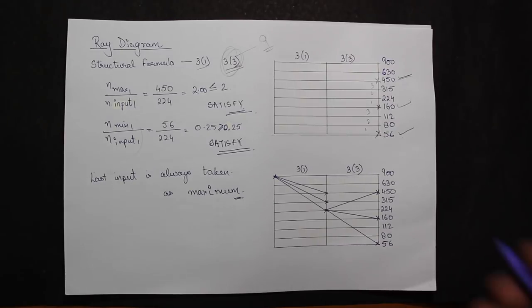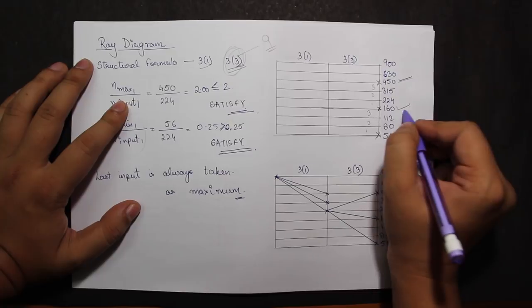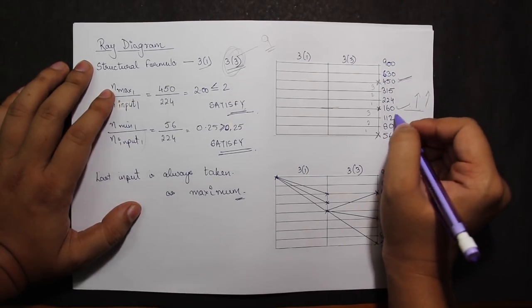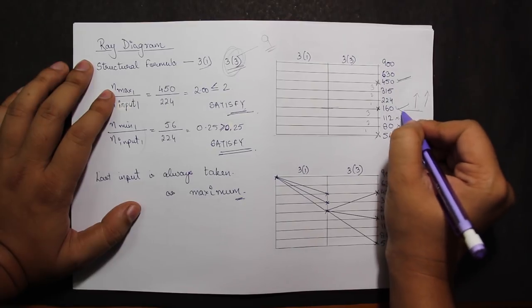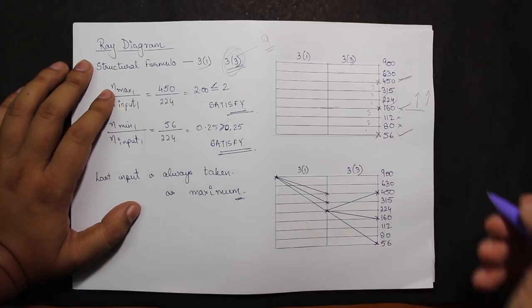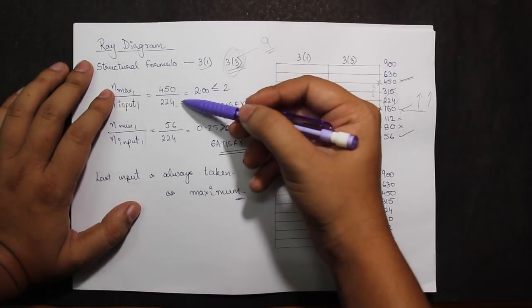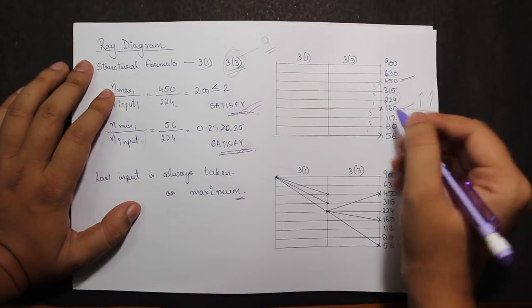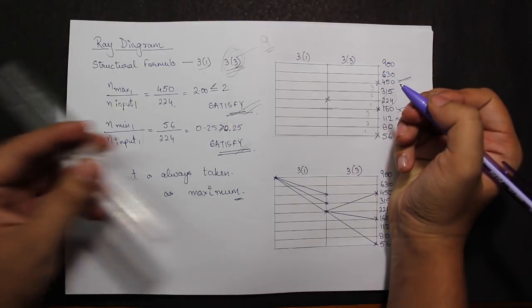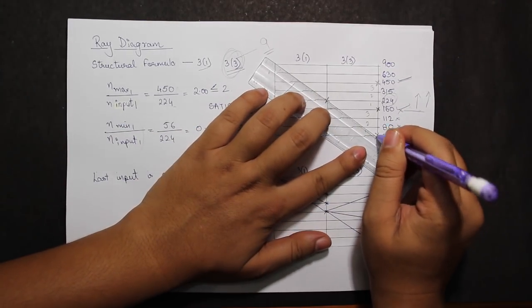The input speed is selected such that it should be greater than half of these speeds, in between 56 and 450. I will be directly skipping 80, 112, and 160, and testing the conditions for the speed 224. I see that by putting into the formula, both conditions are satisfied, therefore I select the input speed as 224. Now I have to join these speeds: 224 with 56, 224 with 160, and 224 with 450.